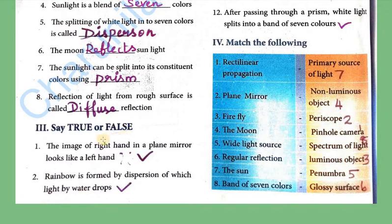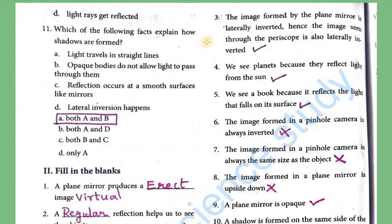Say true or false. The image of a right hand in a plane mirror looks like a left hand — this is caused by lateral inversion, true. Rainbow is formed by dispersion of white light by water drops — true. The image formed by a plane mirror is laterally inverted, hence the image seen through a periscope is also laterally inverted — true. We see planets because they reflect light from the sun — true.